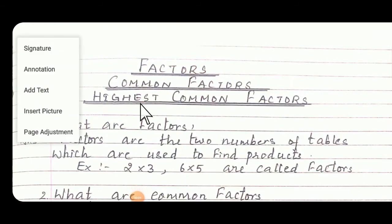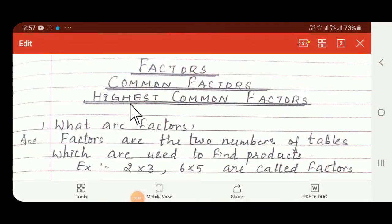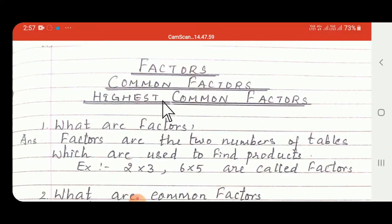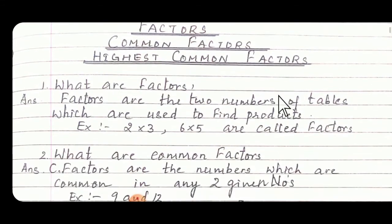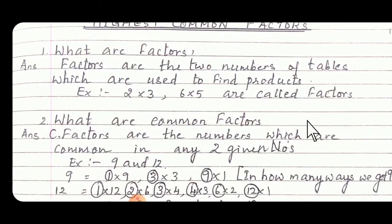Hello children. Now we are going to begin with factors and multiples, then we are going to learn common factors and then highest common factors. Factors — what are factors? Factors are the two numbers of tables which are used to find products. 2 and 3, 6 and 5 are called as factors.